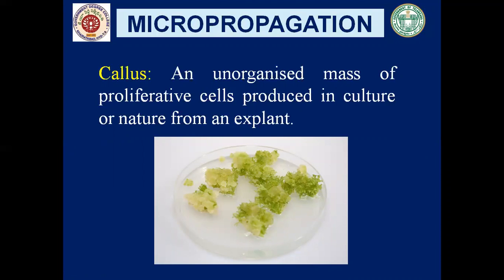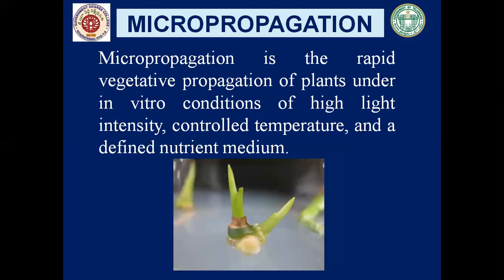One of the plant tissue culture techniques is micropropagation. Micropropagation is a rapid vegetative propagation of plants under in vitro conditions of high light intensity, controlled temperature, and a defined nutrient medium. Along with the explant, these in vitro conditions play an important role — proper light intensity, controlled temperature, and the nutrient medium, along with aseptic conditions.